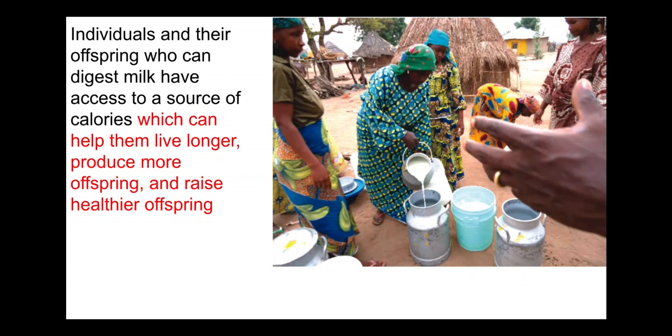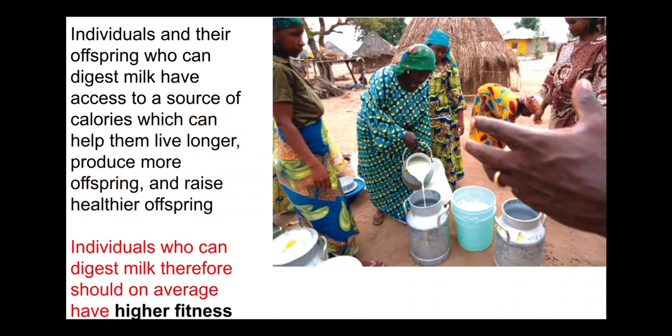If you avoid milk, you still don't have access to an important source of calories. So individuals who can digest milk effectively should on average have higher fitness — they should be more likely to live to reproductive maturity, more likely to reproduce, and more likely to produce more offspring.